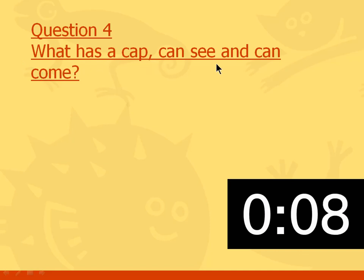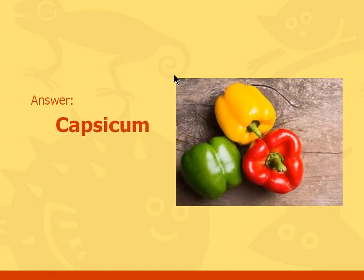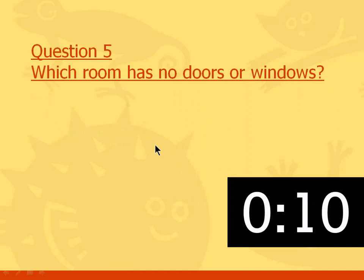Question number four: what has a cap, can see, and can come? To remind you all to subscribe to our channel and like it as well. Hit the notification bell and give a thumbs up. The answer is capsicum. It has a cap, it can see, and it can come. Get it?